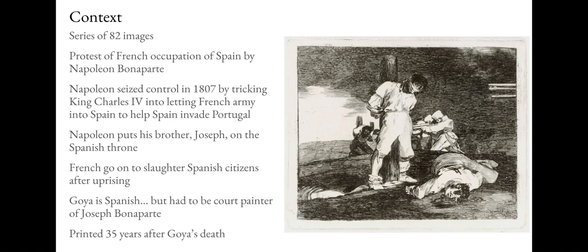Napoleon convinces King Charles to let the French army into Spain, supposedly to help Spain invade Portugal. But it's a case of fingers crossed behind his back — Napoleon makes a promise he has no intention of keeping. Instead, he goes in and takes over Spain, puts his brother Joseph Bonaparte on the Spanish throne, famine ensues, war breaks out, and the Spanish attempt an uprising against the French — which just leads to the slaughter of Spanish citizens.